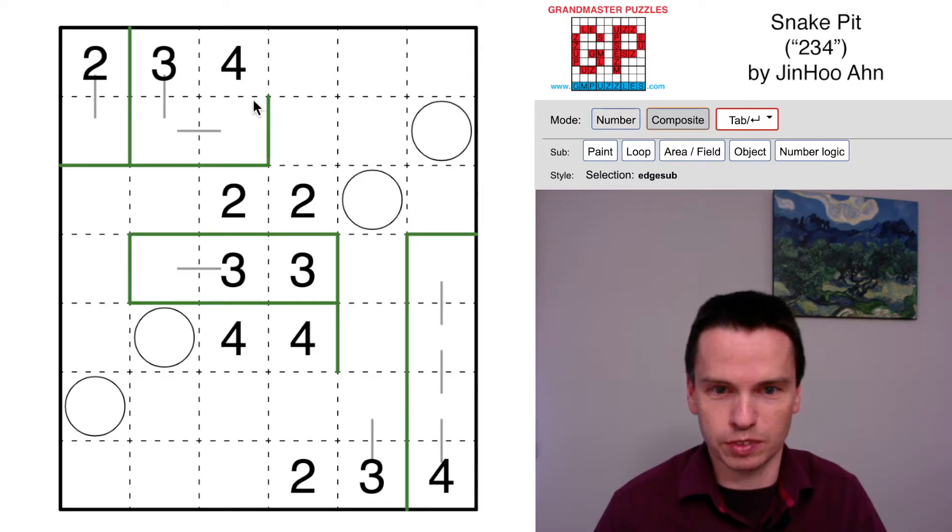That means this three comes over like so. It means we finished this two, and we now have a snake coming out here that's at least four long, so it's got to start from this cell and come all the way to here.